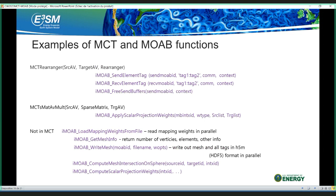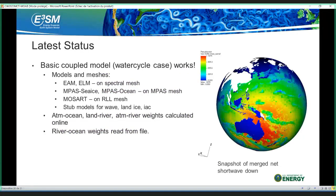The latest status is that the basic coupled model water cycle case actually works. We can couple the atmosphere and land model on the spectral mesh, the MPAS sea ice and ocean on the MPAS Voronoi mesh, the MOSART river model on a regular lat-long grid, and stub models for wave, land, and ice and integrated assessment models. The atmosphere-ocean, land-river, and atmosphere-river weights are all calculated online. The river-ocean weights are still read from a file due to special processing needed at the river mouth. We just got this working basically this week.